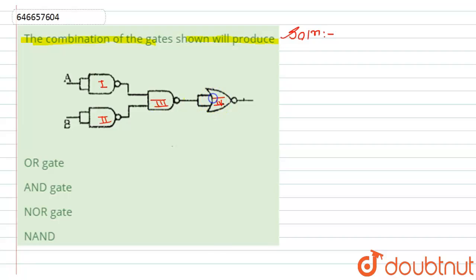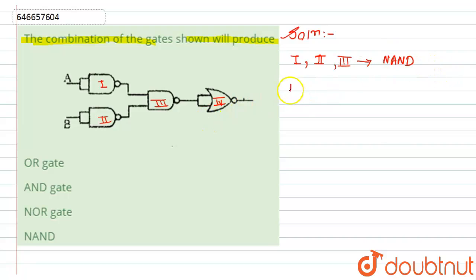The first, second, and third gates are all NAND gates. All three of these gates are NAND gates. The fourth one is a NOR gate.